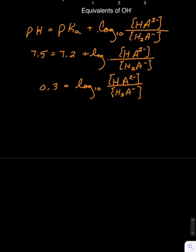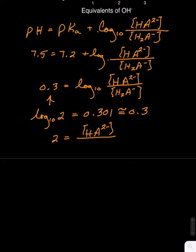Now we simply note that the antilog of 0.3 is 2. That is, the log to the base 10 of 2 is 0.301, or approximately 0.3. So the ratio of the HA2- concentration to the H2A- concentration is 2, and we can write this as 2 over 1.